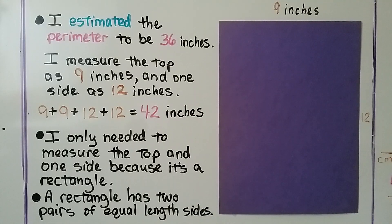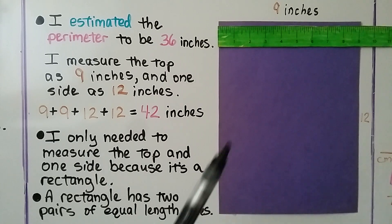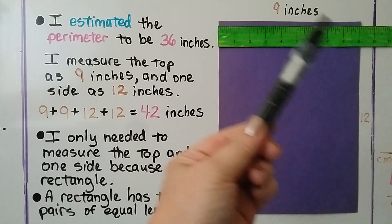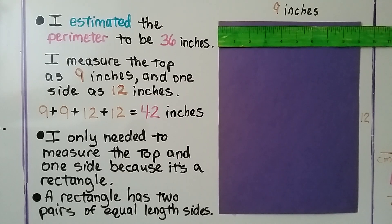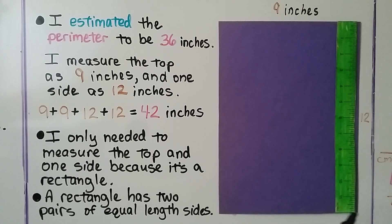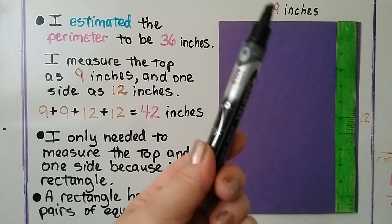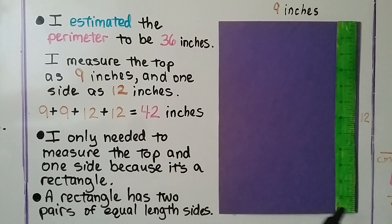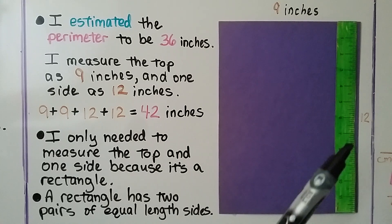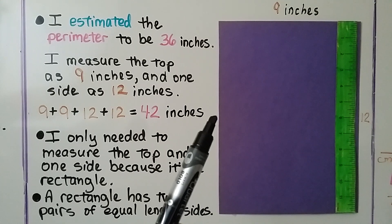I estimated the perimeter to be 36 inches. Now I measure the top with my ruler as 9 inches — I had estimated 8 inches. And I can measure one side as 12 inches; it's the whole length of the ruler. I thought it was 10 inches. I only needed to measure the top and one side because it's a rectangle — if that's 9 inches, then the opposite side is also 9 inches, and if this is 12 inches, then the other side is 12 inches.